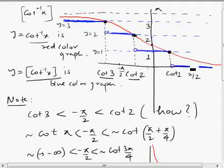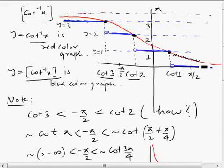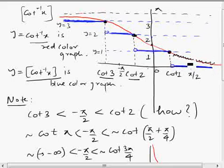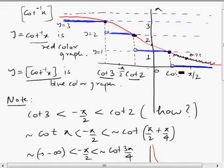Between cot1 and infinity, the graph of cot⁻¹x lies between 0 and 1. Applying the greatest integer function to these values makes them all zero — for example, ⌊0.75⌋ = 0. So for all x beyond cot1, the greatest integer graph falls to the x-axis, i.e., the value is zero.